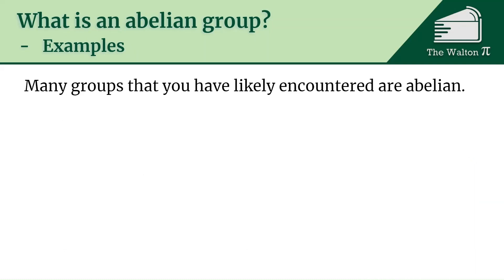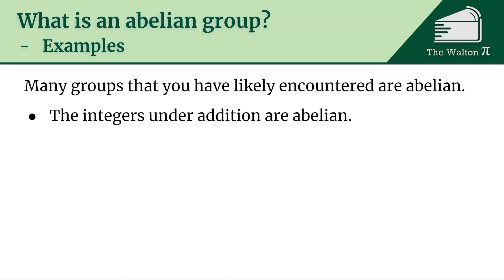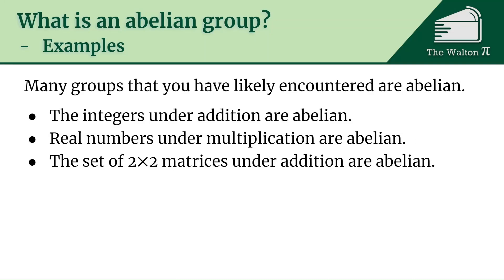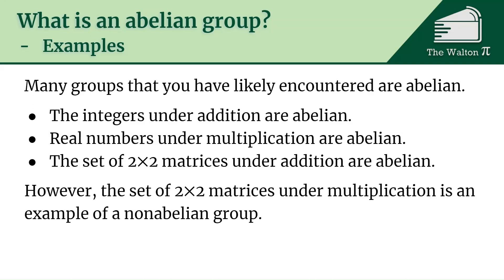The vast majority of the groups that you've already seen are probably going to be Abelian groups. For example, the integers under addition is an Abelian group; all real numbers under multiplication are Abelian — it doesn't matter if you do two-thirds times seven or seven times two-thirds, those give you the same result. The set of two by two matrices under addition is also an Abelian group. However, the set of two by two matrices under multiplication is an example of a non-Abelian group.